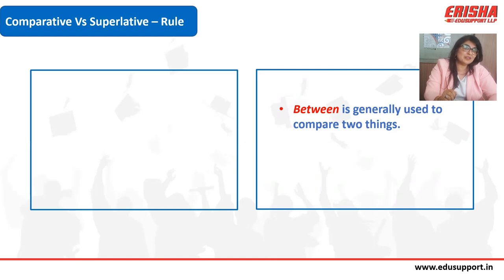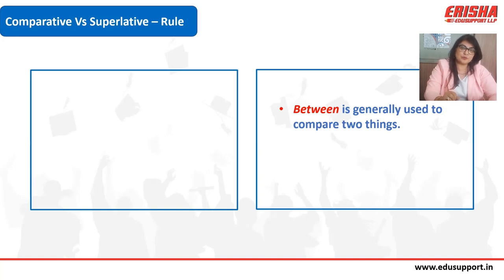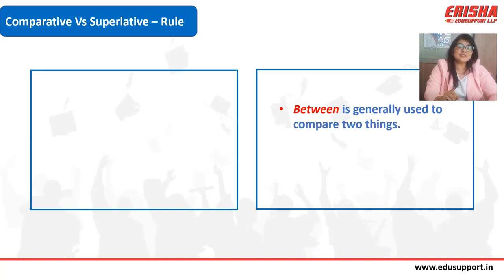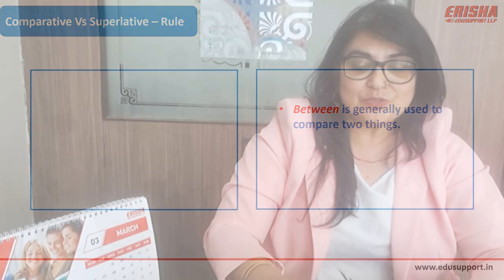'I' is a subject pronoun and 'me' is an object pronoun. 'Between' is a preposition, so after a preposition you always need the object of the preposition — an object pronoun. So it will always be 'between you and me.'